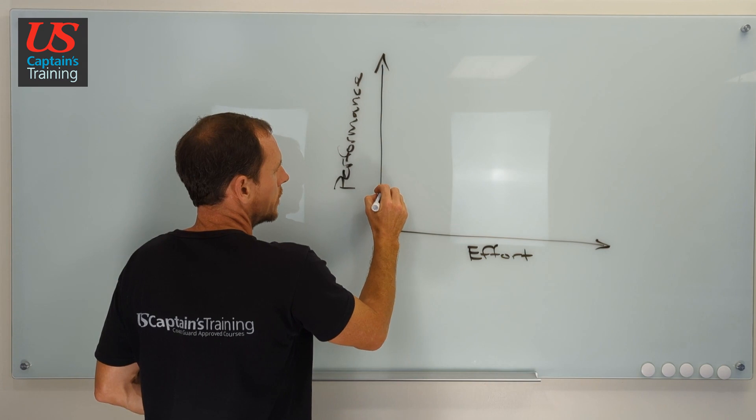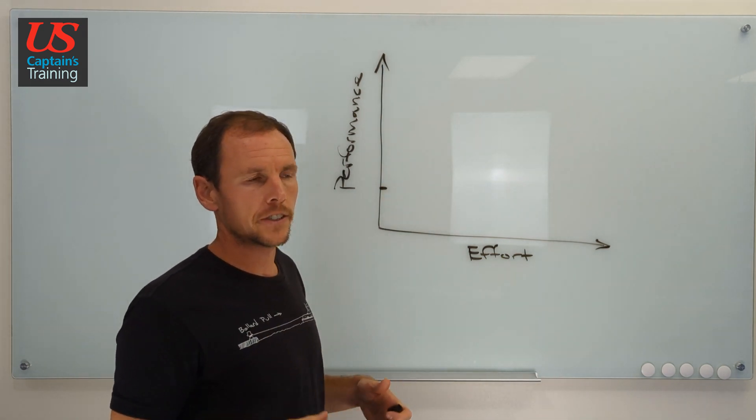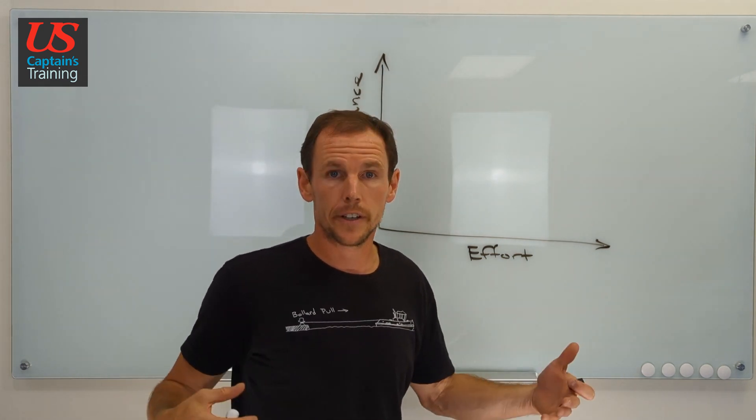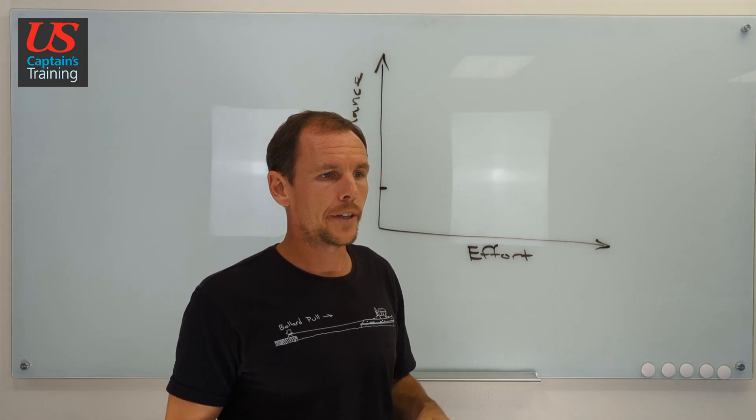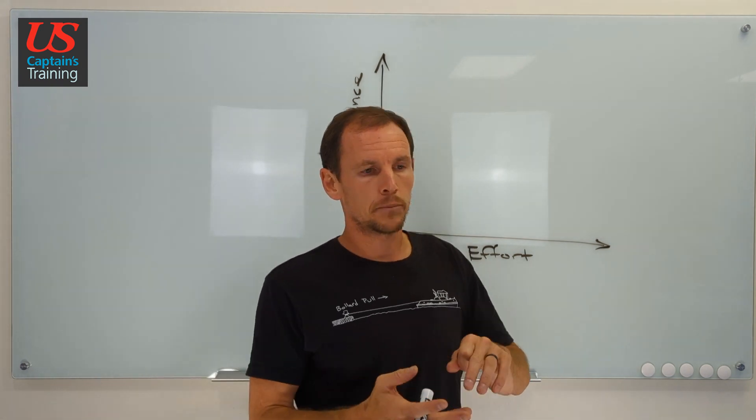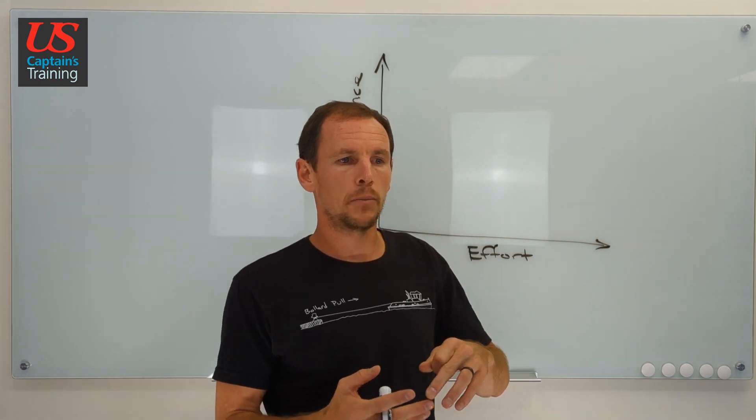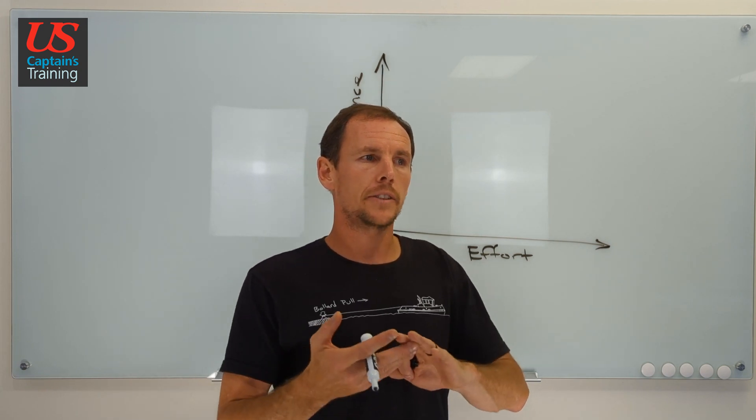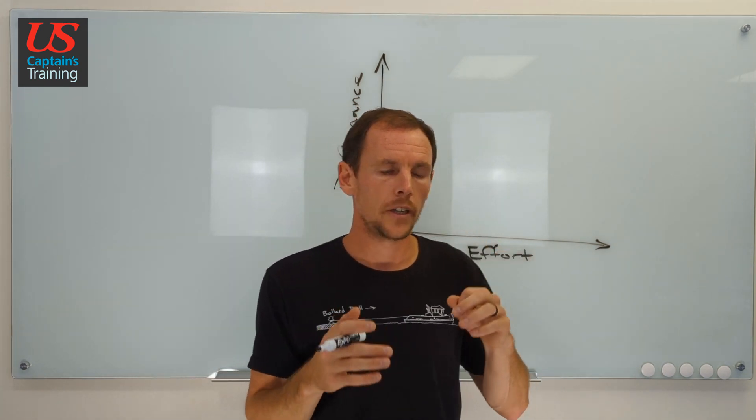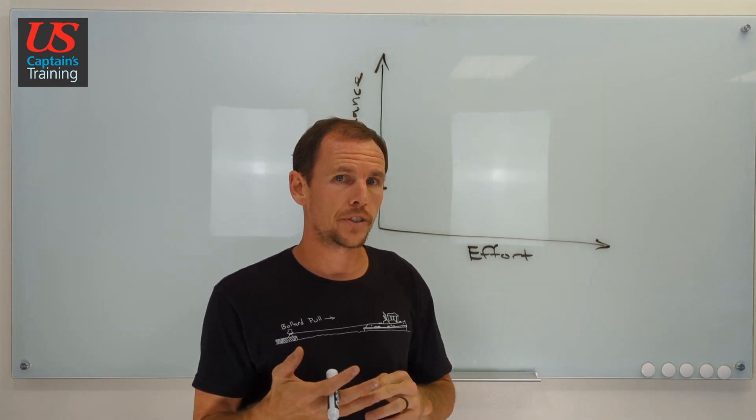So you're going to start at some level, right? You have some type of proficiency level. You come into charting, for example, and you can do certain things like add and subtract. You can do some multiplication. You have some understanding of these concepts.